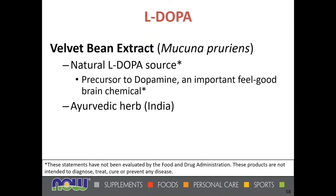L-DOPA is derived from velvet bean extract, which has been used in Ayurvedic medicine for thousands of years. The product provides 15% L-DOPA. Velvet bean extract is a source material for the natural production of dopamine, which helps us feel good.